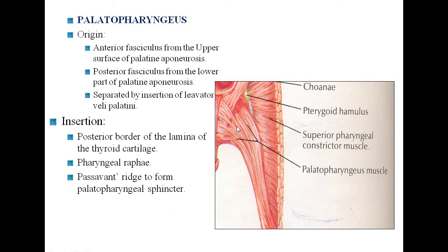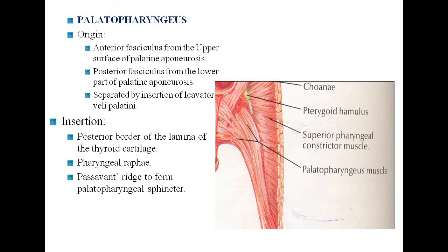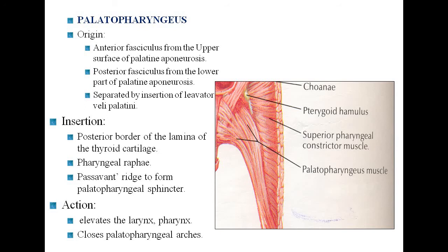Palatopharyngeus muscle: the origin has two fasciculi — the anterior fasciculus from the upper surface of the palatine aponeurosis and the posterior fasciculus from the lower surface of the palatine aponeurosis. These two fasciculi are separated by the insertion of levator veli palatini. Insertion is into the posterior border of the lamina of the thyroid cartilage and the pharyngeal raphae, forming the Passavant's ridge. Action: elevation of the larynx and pharynx and closure of the palatopharyngeal arch.